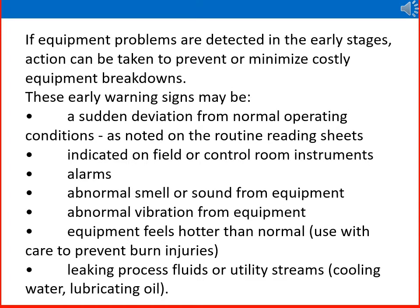If equipment problems are detected in early stages, action can be taken to prevent or minimize costly equipment breakdowns. Early warning signs may include a sudden deviation from normal operating conditions as noted on routine reading sheets, indicated by field or control room instruments, alarms, abnormal smell or sound from equipment, abnormal vibration from equipment, equipment feeling hotter than normal — use care to prevent burns and injuries — and leaking process fluid or utility streams such as cooling water or lubricating oil.